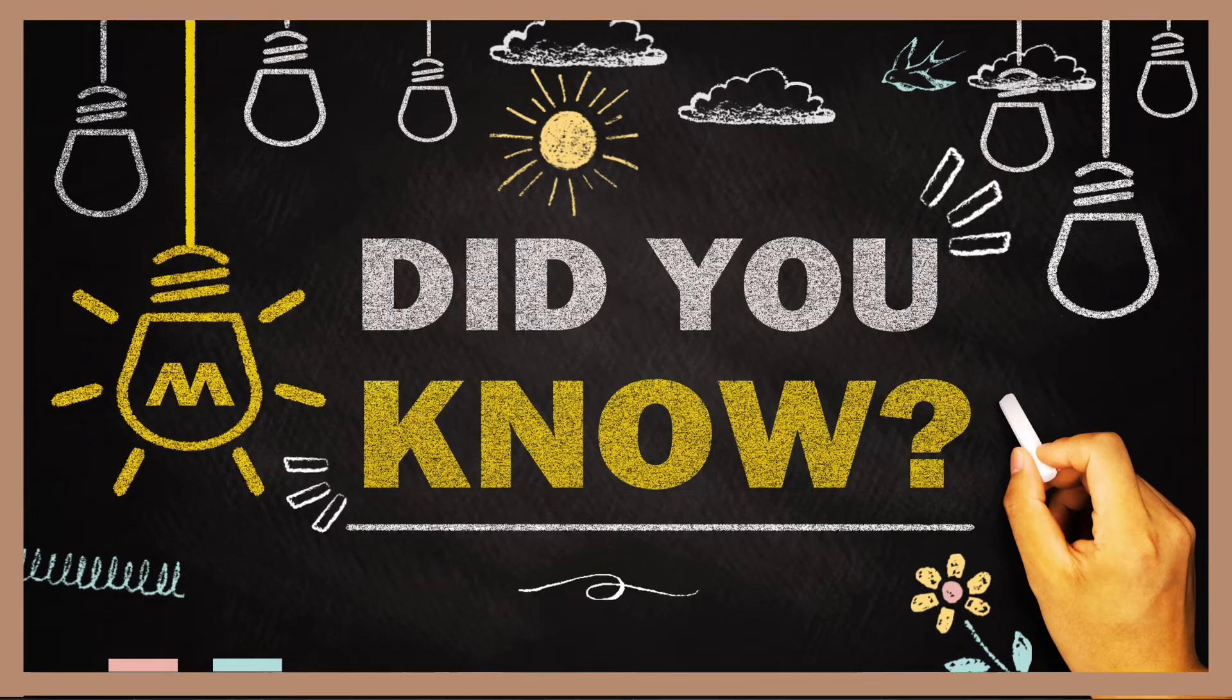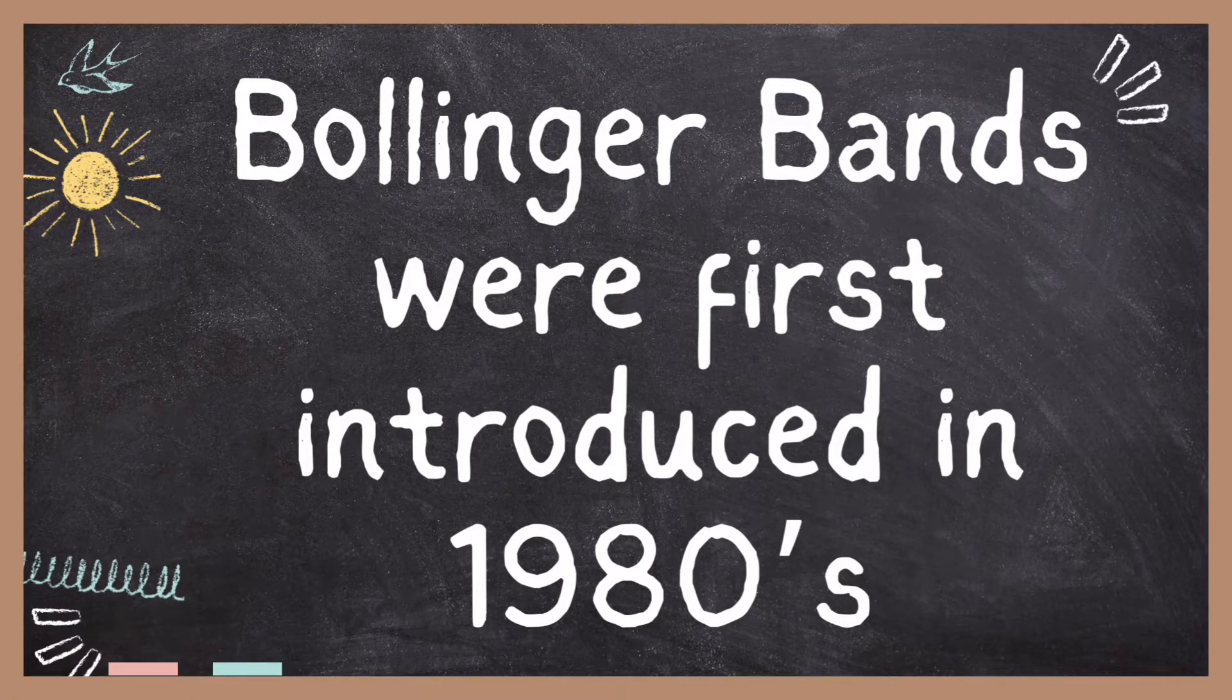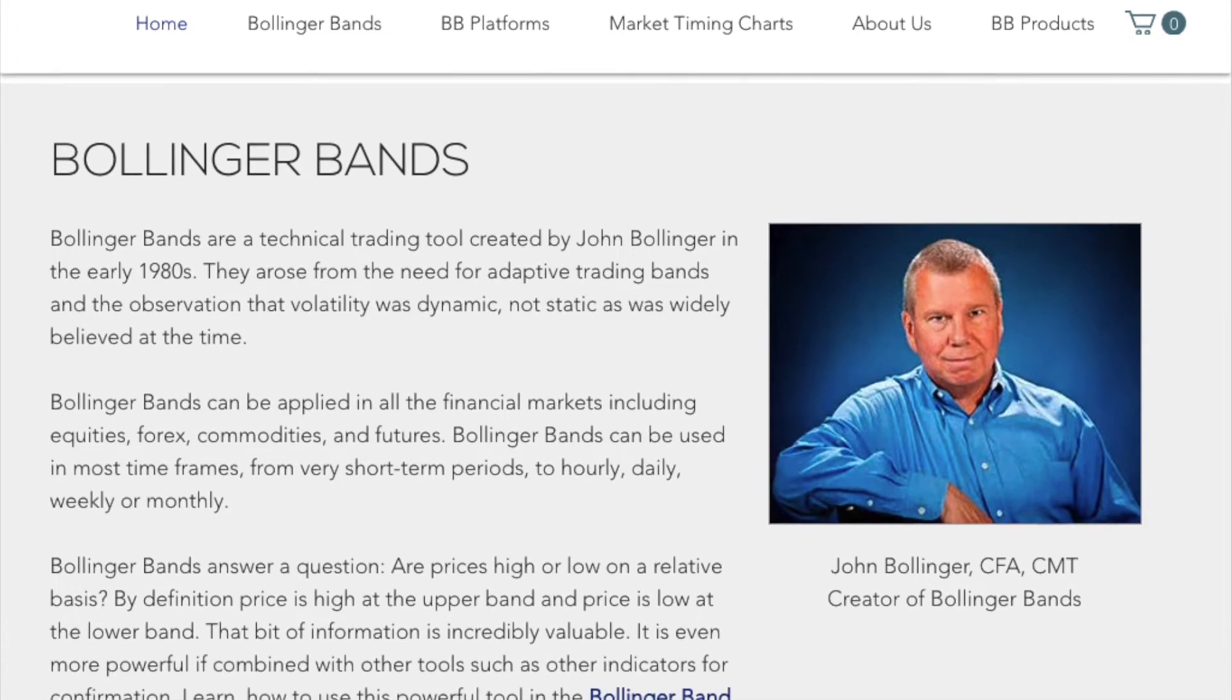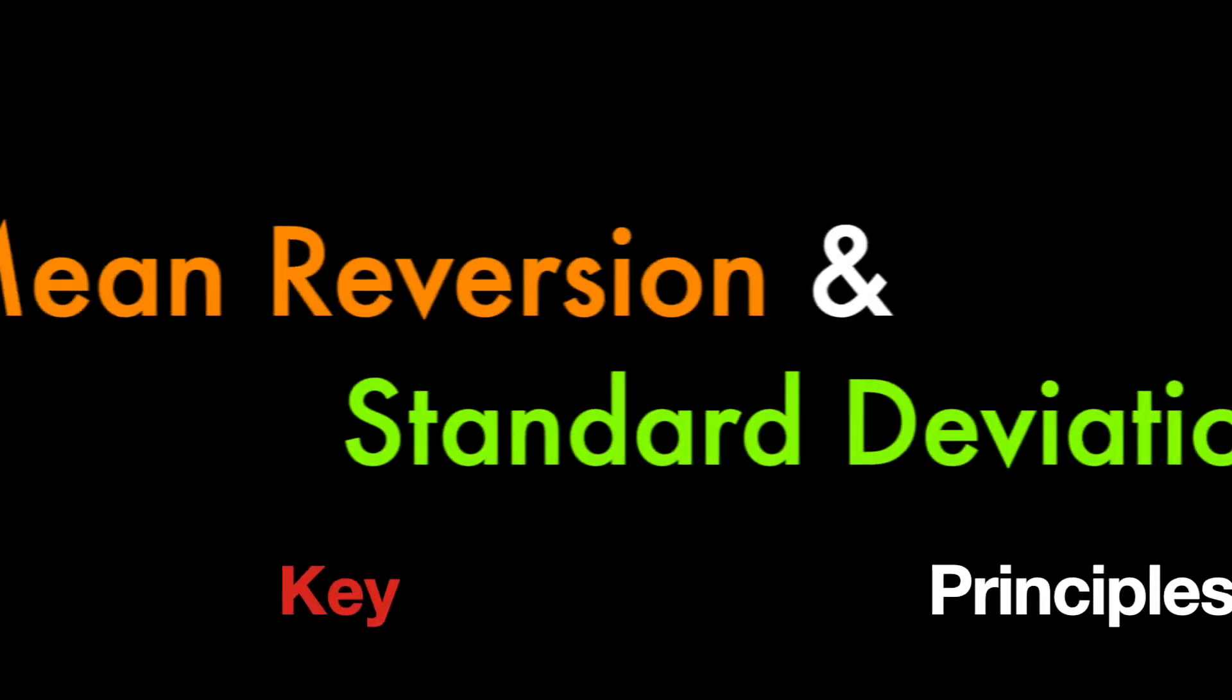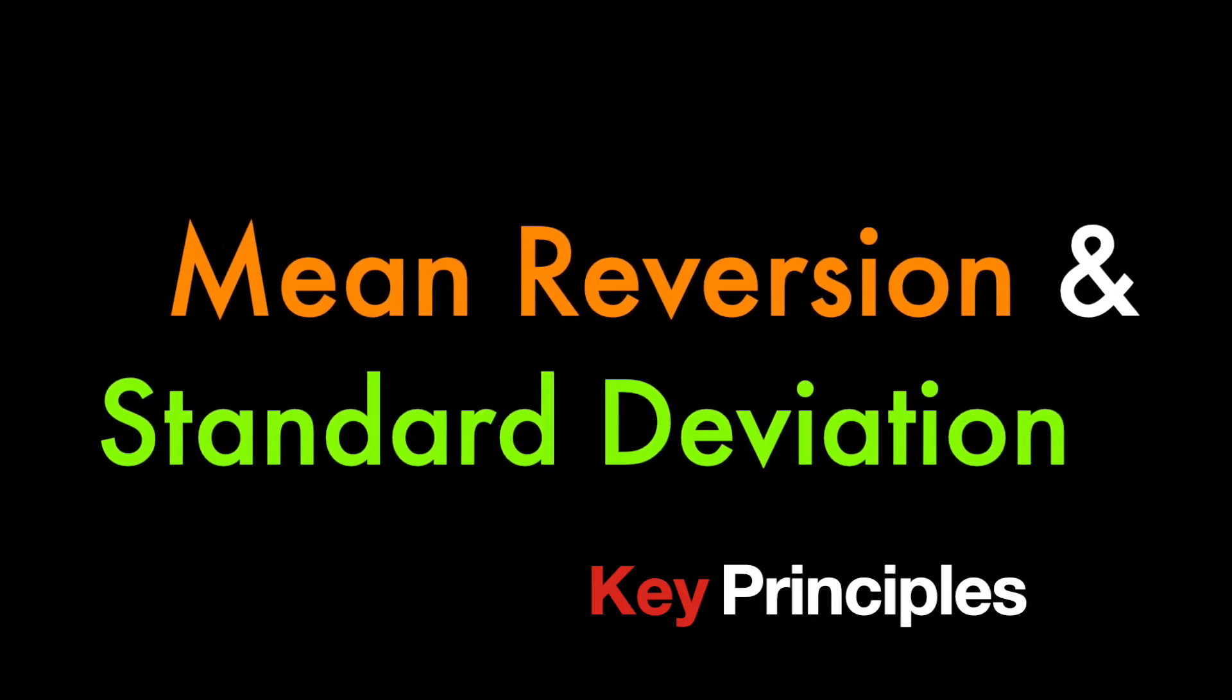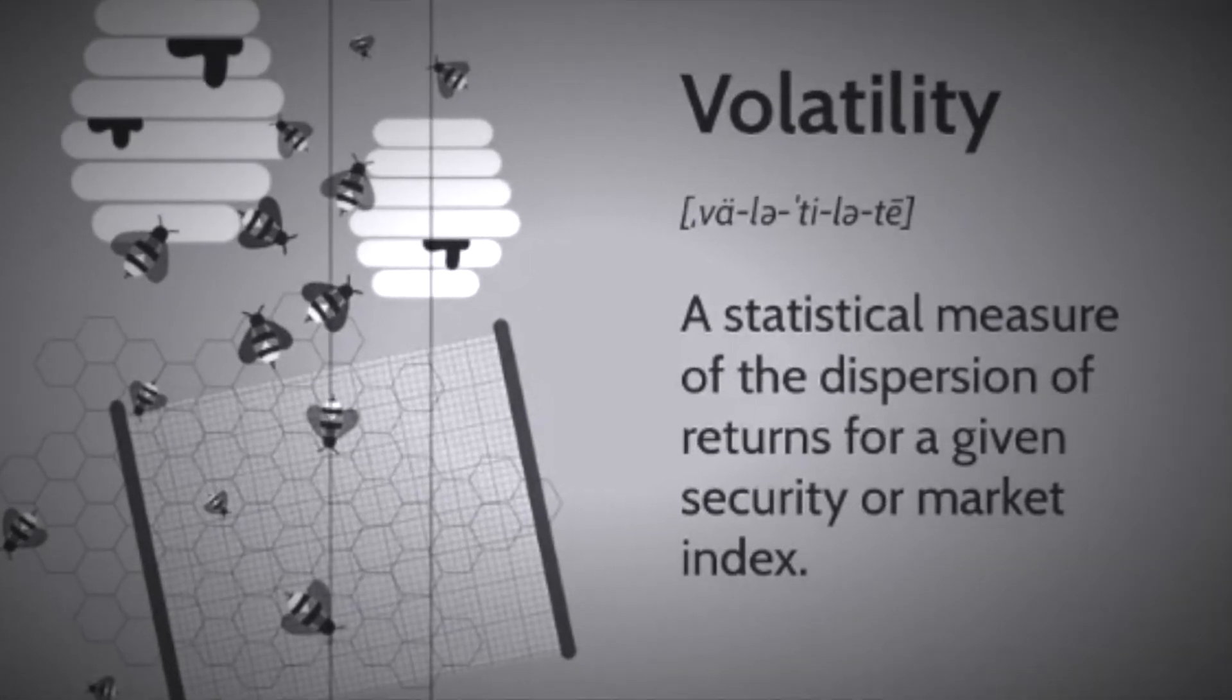Did you know that Bollinger Bands have been around for almost 50 years? In the 1980s they were first introduced by John Bollinger, who used this principle in his own trading. He basically combined the principles of mean reversion and standard deviation to come up with a new technique that turned out to be really effective in tracking market volatility.